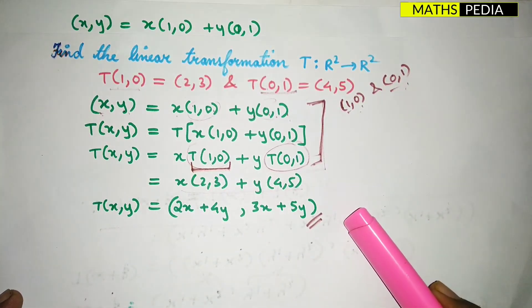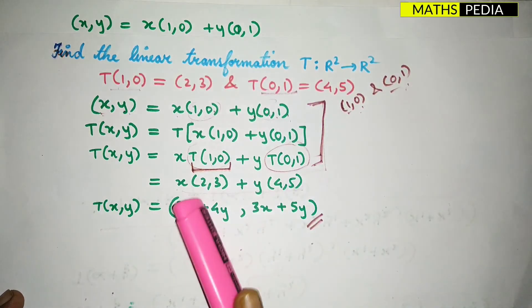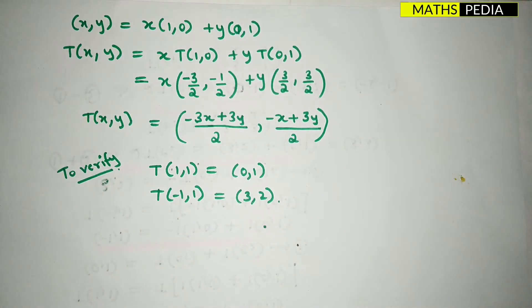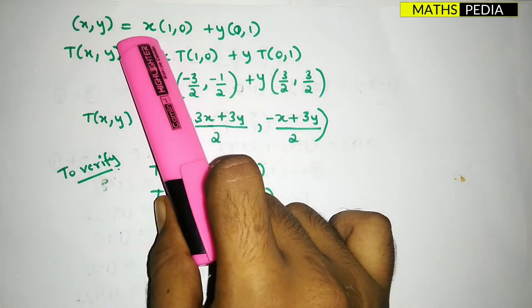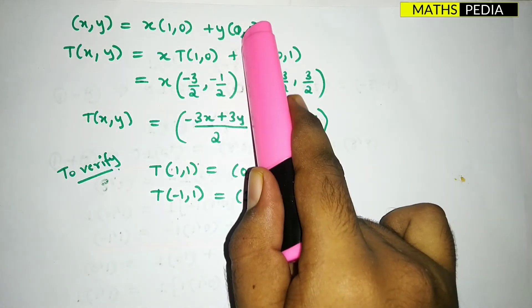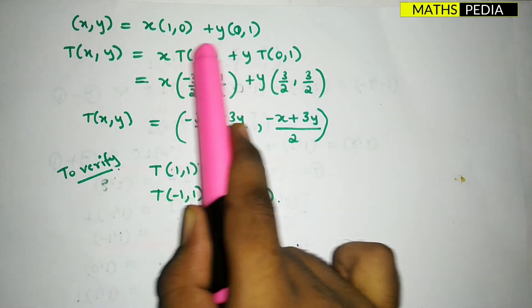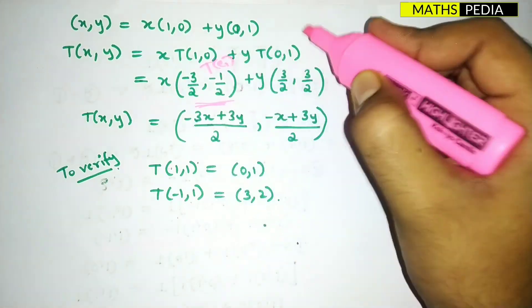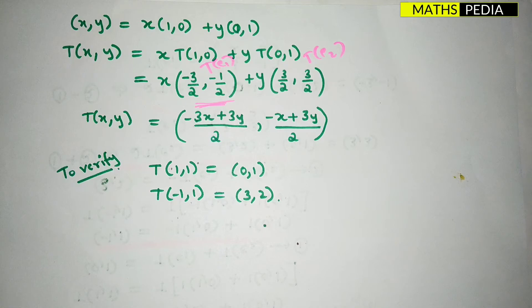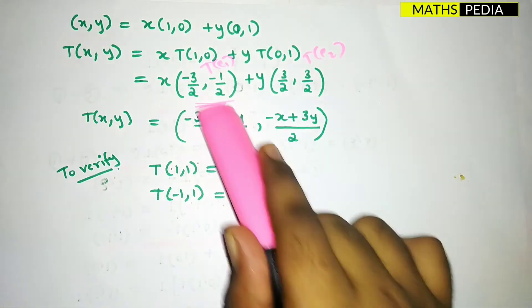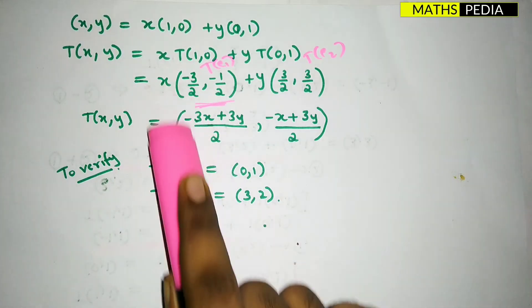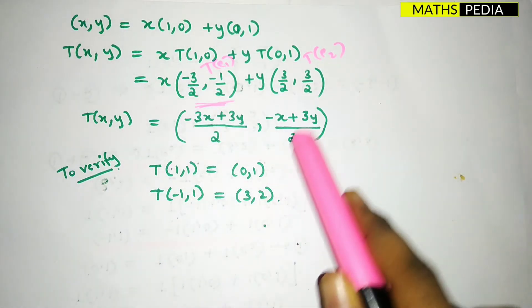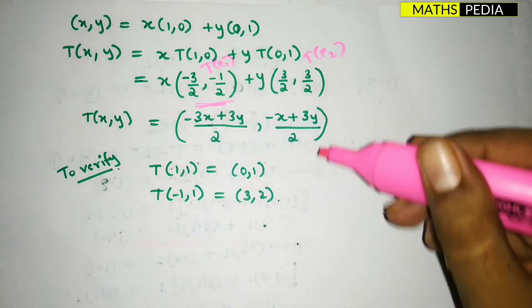In the previous question T(e1) and T(e2) were directly given, but here they were not, which is why we did this longer procedure. Now writing x comma y = x·(1,0) + y·(0,1) and applying T: T(x,y) = x·T(e1) + y·T(e2) = x·(-3/2,-1/2) + y·(3/2,3/2). This gives the final answer: T(x,y) = ((-3x+3y)/2, (-x+3y)/2).